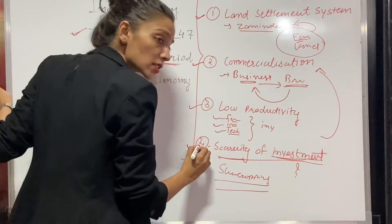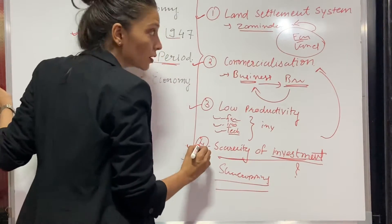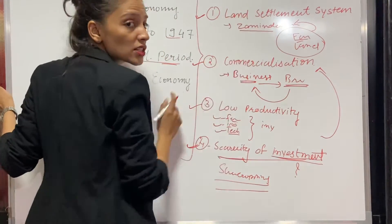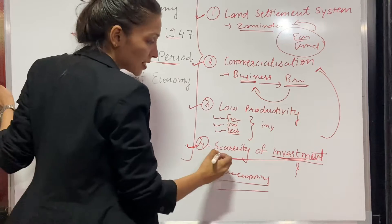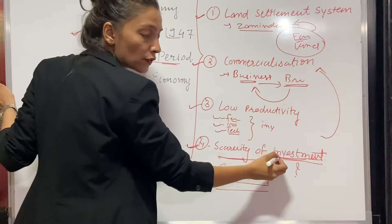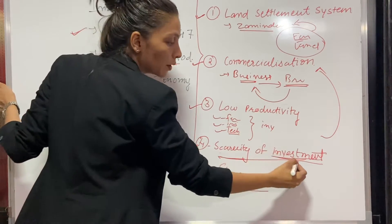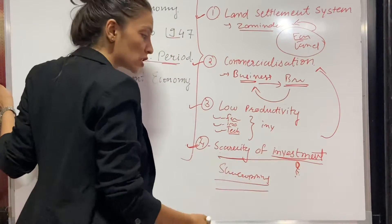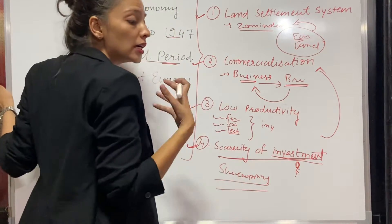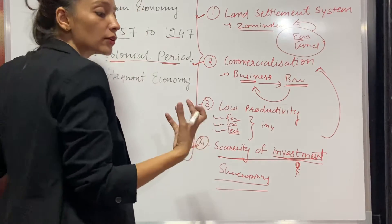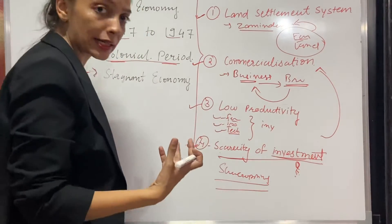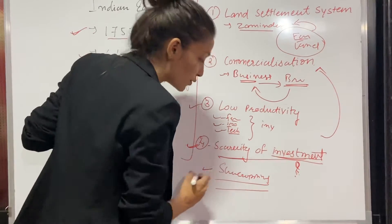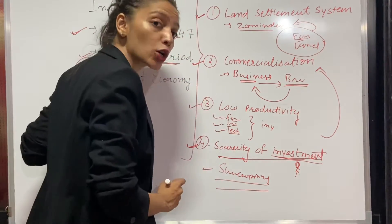The fourth and last reason for the agriculture stagnation is scarcity of investment. Farmers were not having enough investment to increase the land fertility, so they started share cropping.